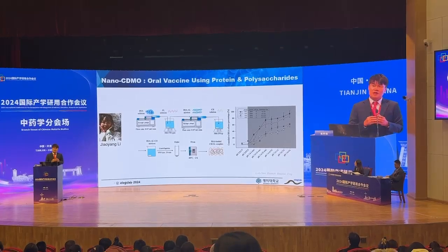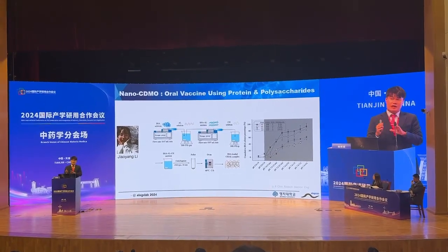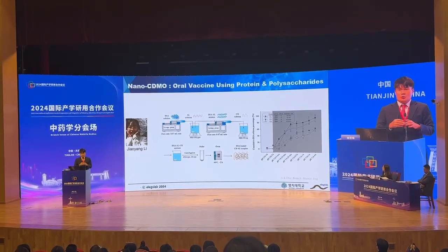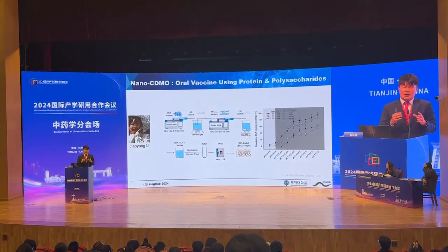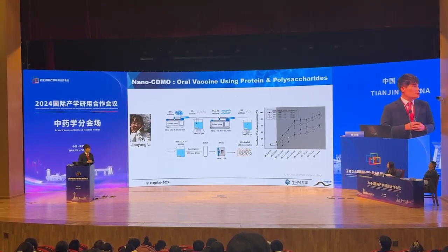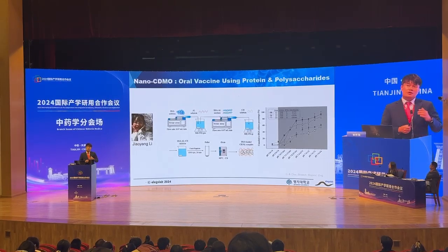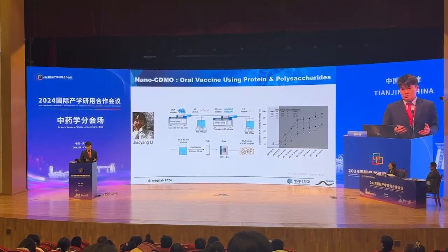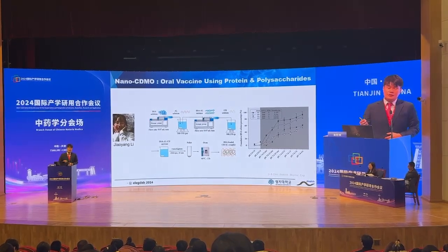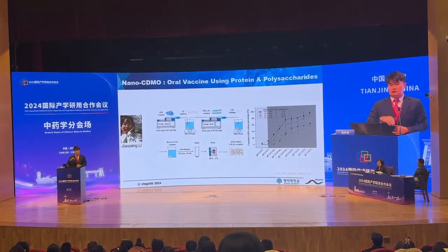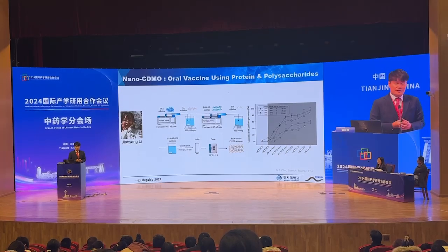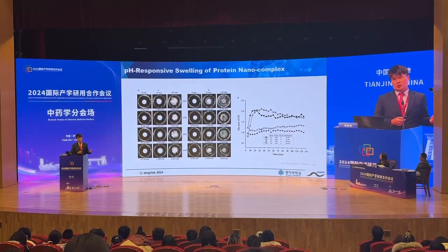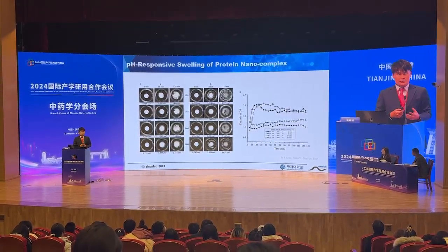What are the intelligent properties? They are pH-responsive. When they meet an acid condition, they don't release their drug or protein — instead they shrink or become compact. But when they meet a neutral condition, like in our intestine, they release their drugs. So this pH-responsive intelligent nanocomplex is really suitable for oral vaccine populations.